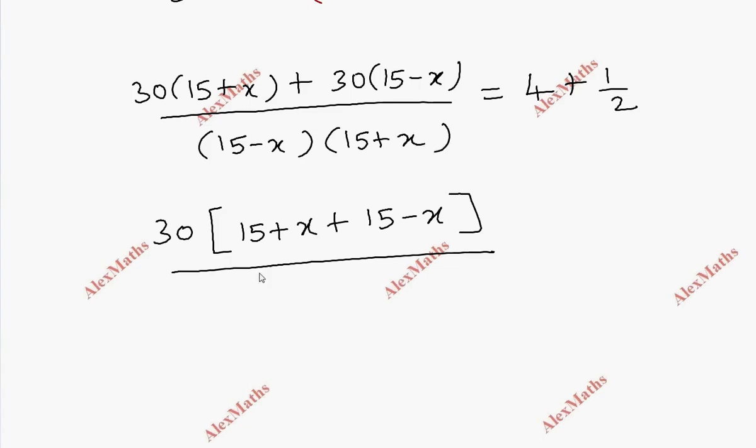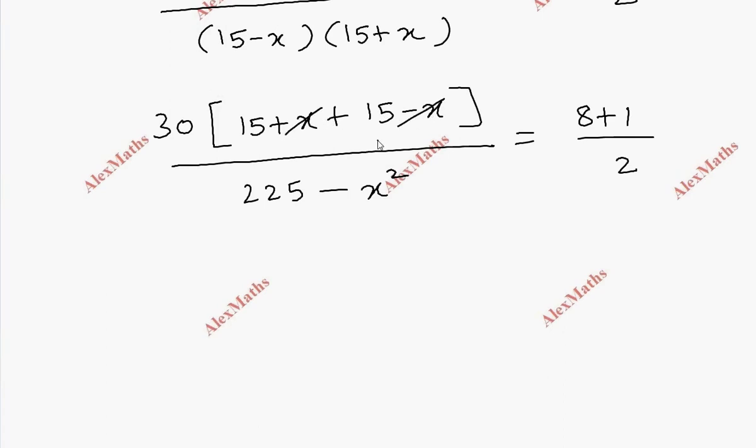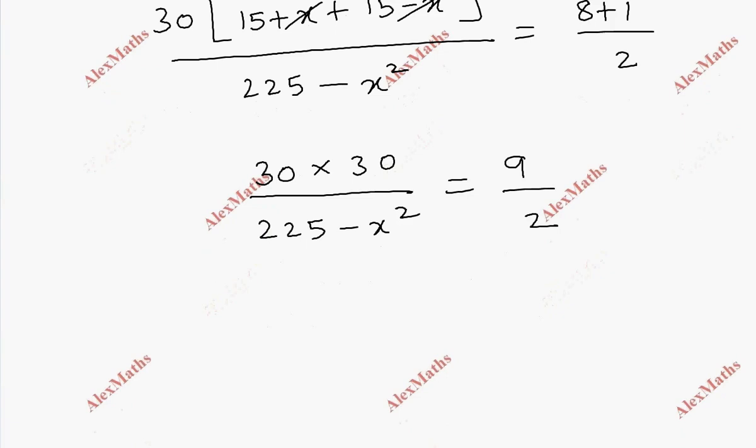So a plus b into a minus b is a squared minus b squared. 15 square is 225 minus x square equal to, the LCM is 8 plus 1, so 9 by 2. So 30 into 15 plus 15 and 30, all divided by 225 minus x square.